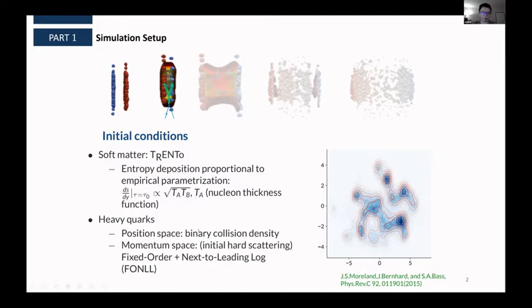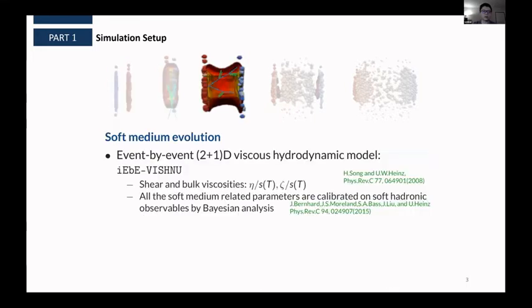After we do Bayesian analysis on the soft sector, we found that the p factor in the generalized mean is very close to zero, and that's why we choose this form of square root of Ta Tb here. And for the heavy quarks, we sampled the momentum from FONLL, which is a fixed order and next-to-leading log calculation. And then for the soft medium evolution, we used event-by-event 2+1D viscous hydrodynamical model called the Vishnu model, which includes both the shear and bulk viscosities.